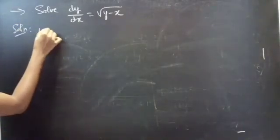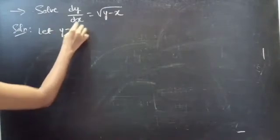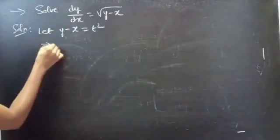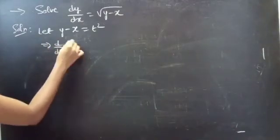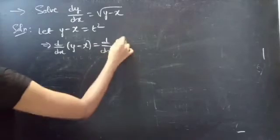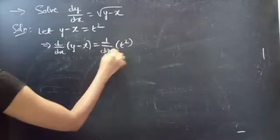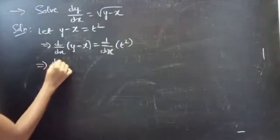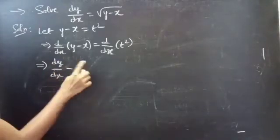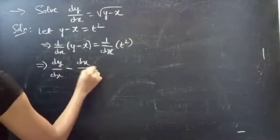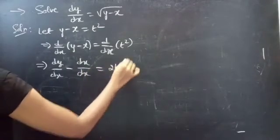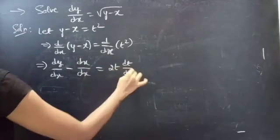Let y minus x equals t squared. Now differentiate on both sides with respect to x. We will get dy/dx minus dx/dx equals 2t times dt/dx.